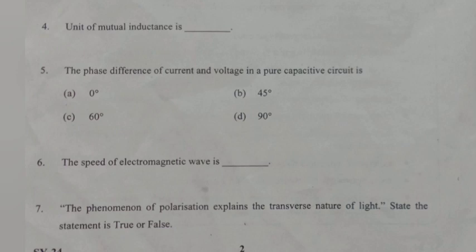Question 5. The phase difference of current and voltage in a pure capacitive circuit is: (a) 0 degree, (b) 45 degree, (c) 60 degree, (d) 90 degree. Answer: (d) 90 degree.